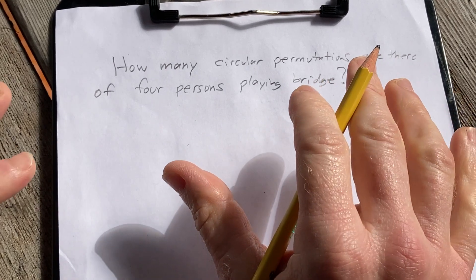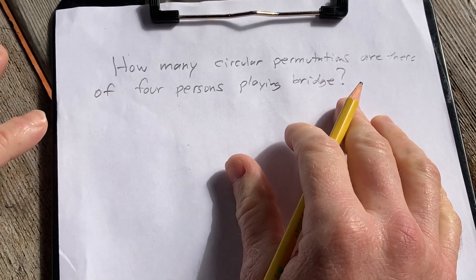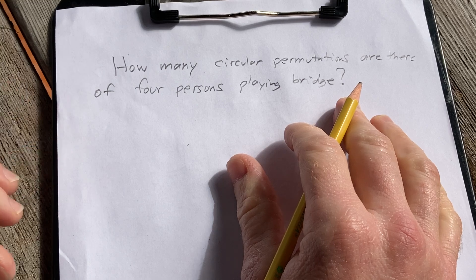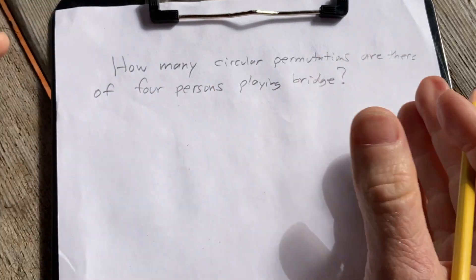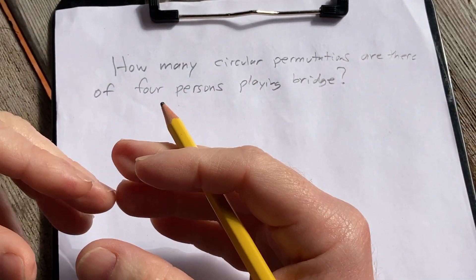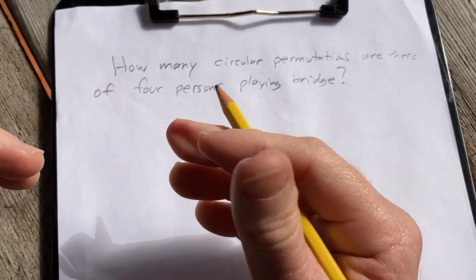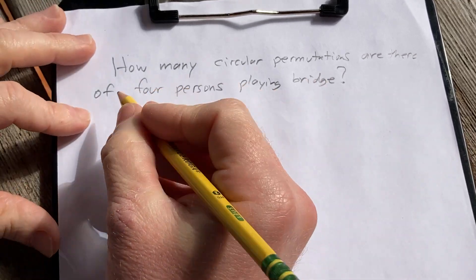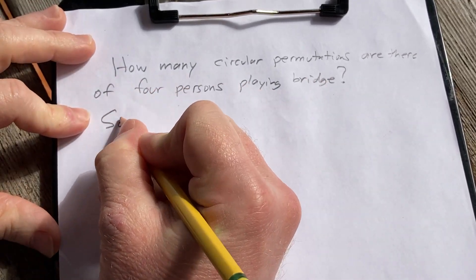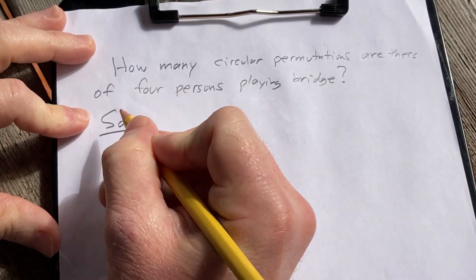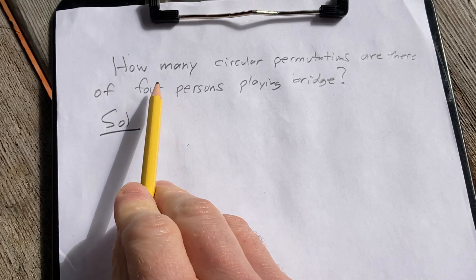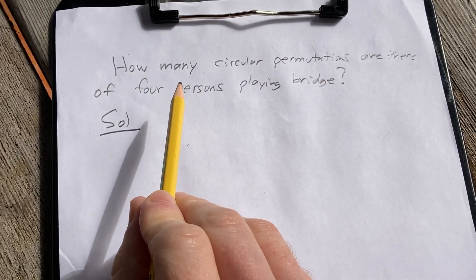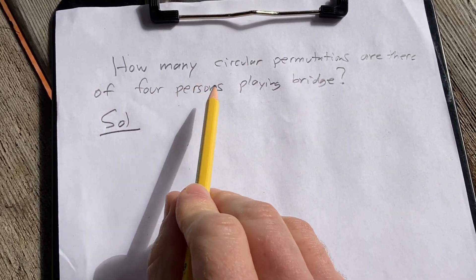Hello, in this video we're going to do a problem involving circular permutations, and we're going to do it without using any formulas. I'm just going to attempt to explain it. So let's go ahead and work through it. Solution. The question says: how many circular permutations are there of four persons playing bridge?